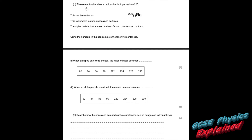Part B: the element radium has a radioactive isotope radium-226, written as 226 on the top, 88 on the bottom, then Ra. It emits alpha particles — the alpha particle has a mass number of 4 (mass number on top) and contains two protons (atomic number on bottom). That's your symbol for alpha — it's like a fish swimming to the left. When an alpha particle is emitted, the mass number becomes 226 minus 4, which is 222.